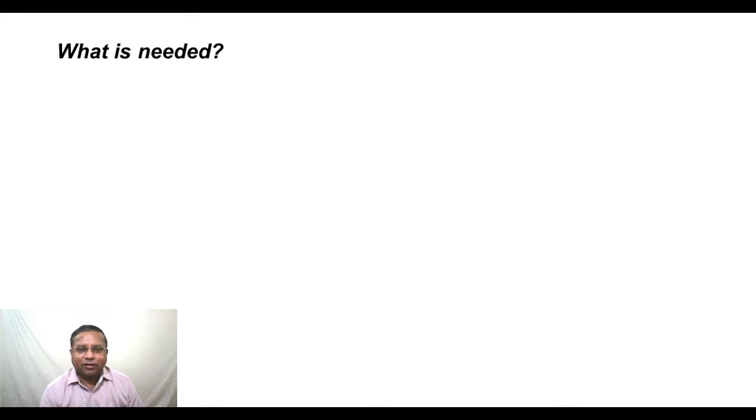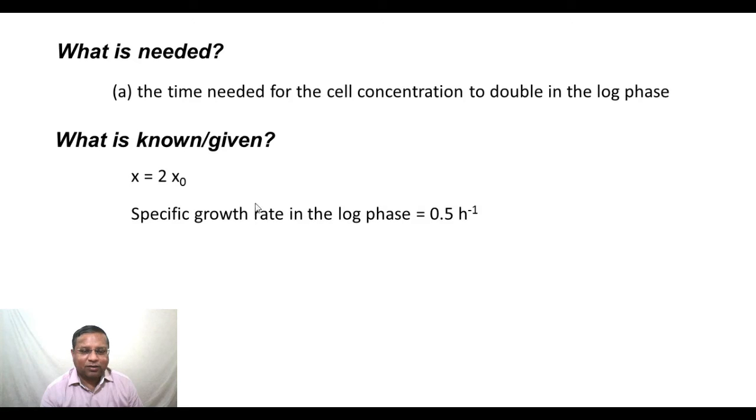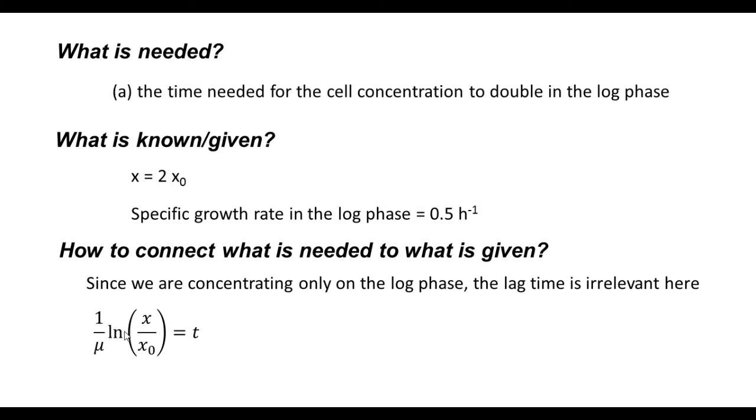For part B, what is needed? The time for the cell concentration to double in the log phase. What is known or given? This written in our terminology would be x equals 2 times x0. The specific growth rate is 0.5 hour inverse. And how to connect what is needed to what is given? Since we are concentrating only on the log phase, the lag time is really irrelevant here. We do not have to worry about it. Therefore, 1 by μ ln of x by x0 equals t. We do not have to worry about plus t0, which is actually the time from the beginning of the batch. So, we are concentrating only on the log phase here.